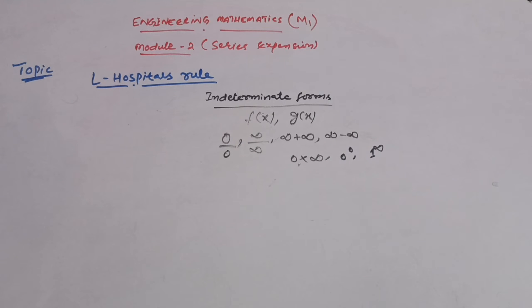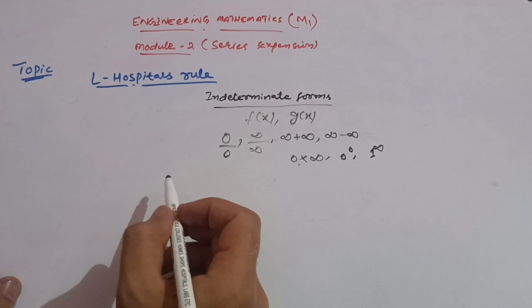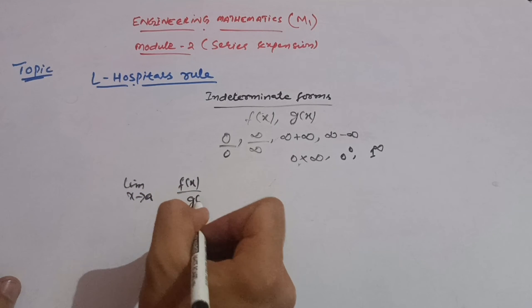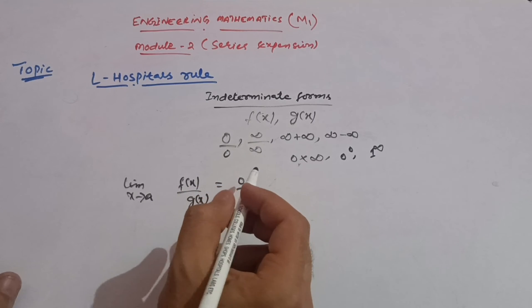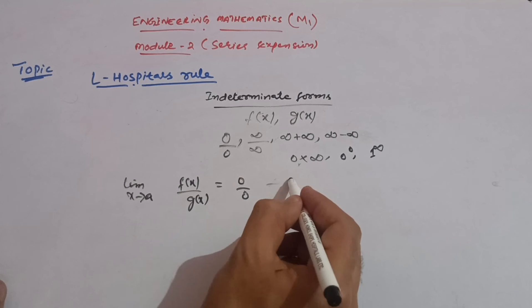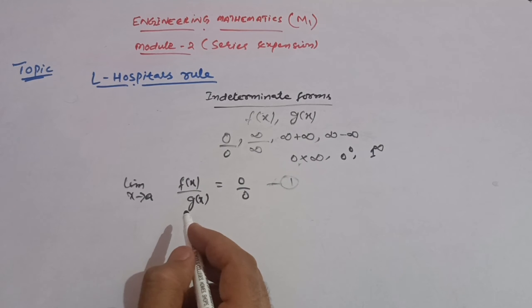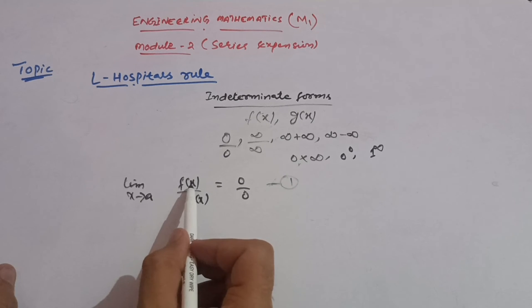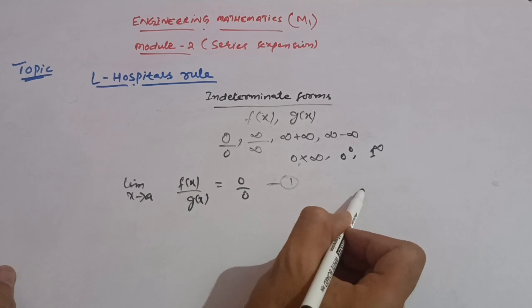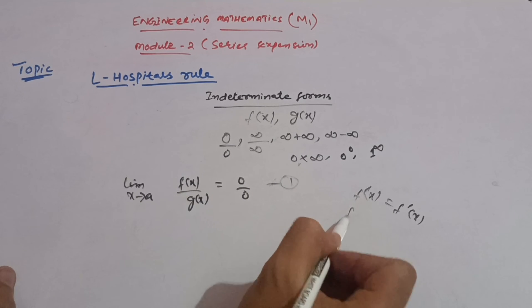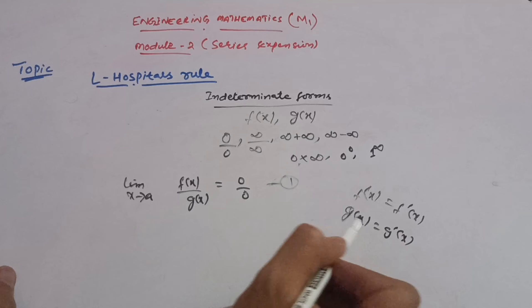Based on these indeterminate forms, you have to use L'Hôpital's method. The general formula: if we have limit x tends to a of f(x) divided by g(x), and it is in the form of zero upon zero or infinity upon infinity, then according to L'Hôpital's rule, you differentiate f(x) and g(x) separately. The differentiation of f(x) is written as f'(x), and g(x) becomes g'(x).